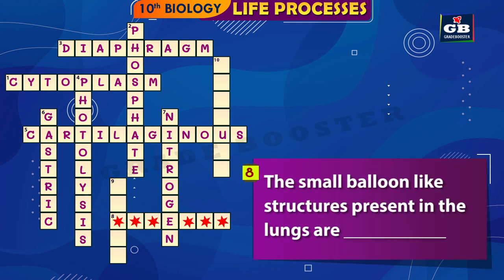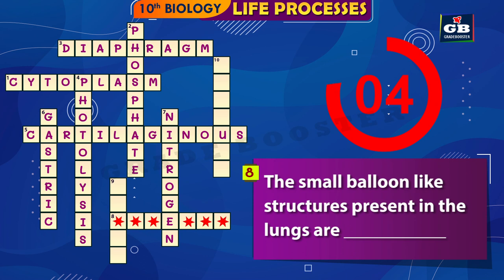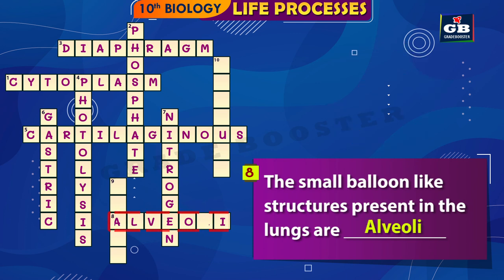8 Across: The small balloon-like structures present in the lungs are dash. The answer is alveoli. The small balloon-like structures present in the lungs are alveoli.